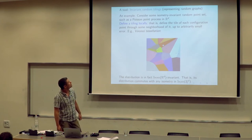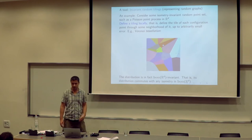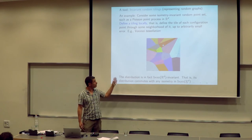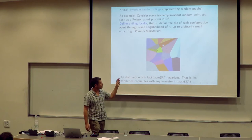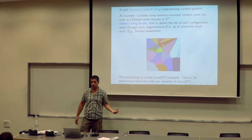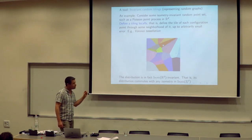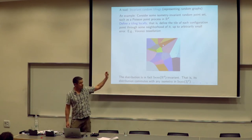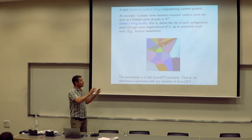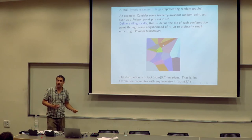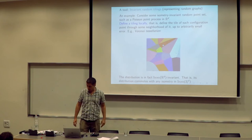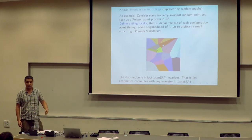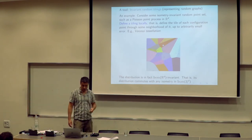Here is an example of an isometry-invariant random tiling of the plane: take some isometry-invariant point process, for example the Poisson point process, and define the Voronoi tiling on it. For every point of the space, we allocate the configuration point which is closest to it. One feature of this rule is that we only need a local rule: if we look around in a large enough neighborhood and check the configuration points there, we can determine the tile to arbitrary precision. Because it is defined by such a local rule, the tiling is also isometry invariant, inheriting that property from the point process.